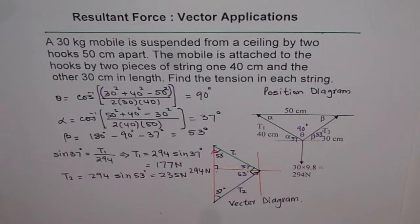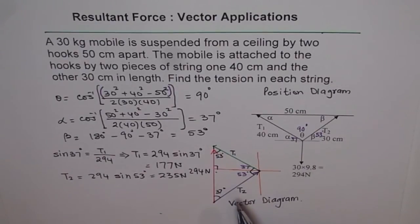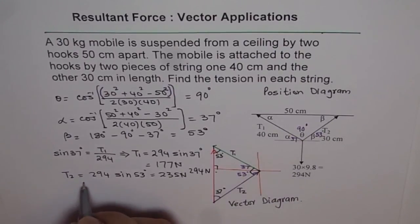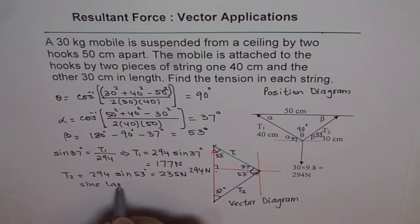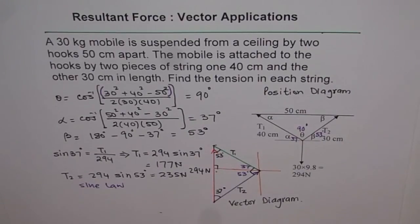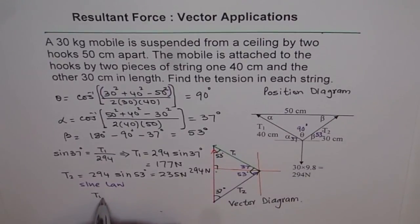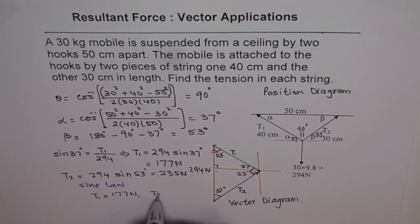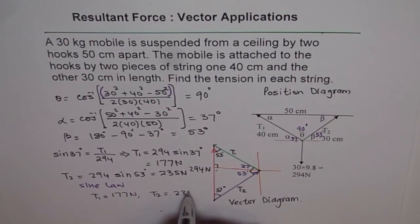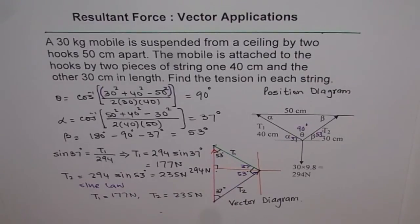Then translate that into a vector diagram. Once you have a vector diagram, use sine law. Basically you have to use sine law, which effectively we use after that. Our answers are T1 equals 177 newtons and T2 equals 235 newtons. Thank you.